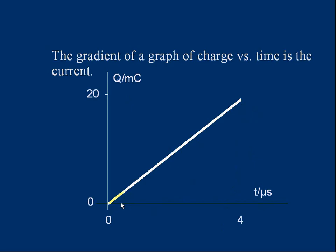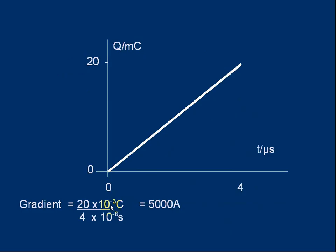Let's actually work it out. The gradient in this case, the rise is 20 millicoulombs, so write 20 times 10 to the minus 3. And the run, this distance here, is 4 microseconds, 4 times 10 to the minus 6 seconds. Do the sums, the answer is 5,000. And it's got a unit, it's amps, I've divided coulombs by seconds. The gradient is 5,000 amps, and that gives us the current. The gradient of the charge time graph is the current.